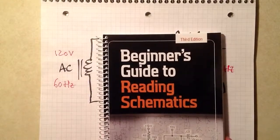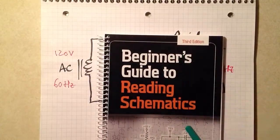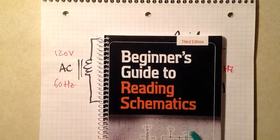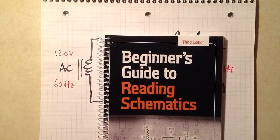Meanwhile, I recommend the Beginner's Guide to Reading Schematics. Again, edited by me, third edition, October 2013. Spiral binding.